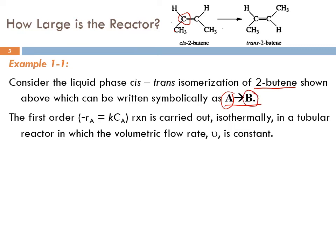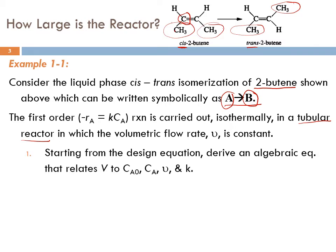It's going from the cis configuration, where the methyl groups are on the same side, and transformed into the trans configuration, where the CH3 groups are on the opposite side. It's a first order reaction: minus RA equals K·CA. The first order reaction is carried out isothermally in a tubular reactor in which the volumetric flow rate, epsilon, is kept constant. Starting from the design equation, derive an algebraic equation that relates V to CA0, CA, epsilon, and K.